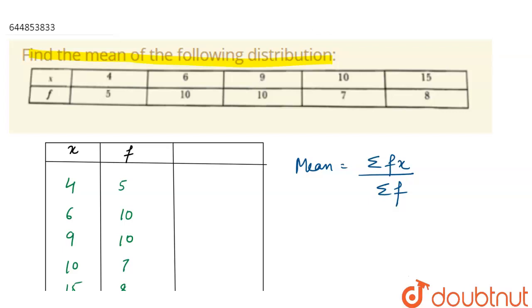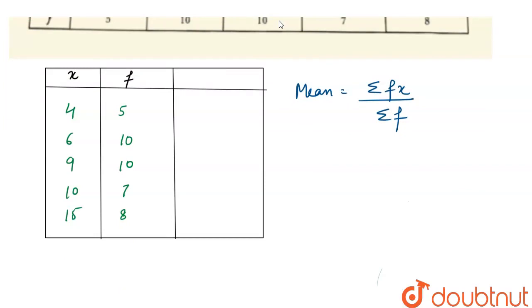First of all we need to find fx. We have x and f, so fx will be 4 into 5 equals 20, 6 into 10 equals 60, 9 into 10 equals 90, 10 into 7 equals 70, and 15 into 8 equals 120.